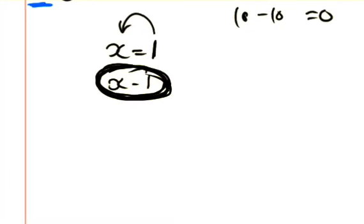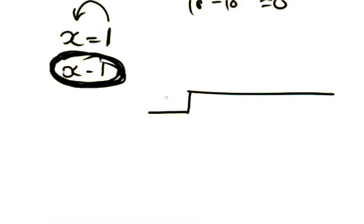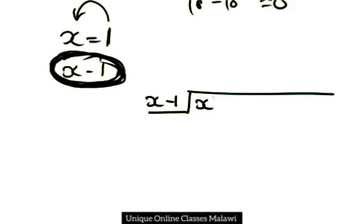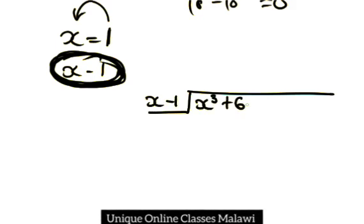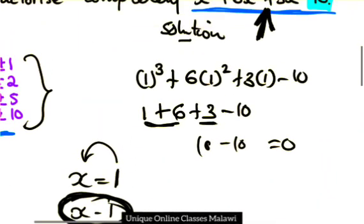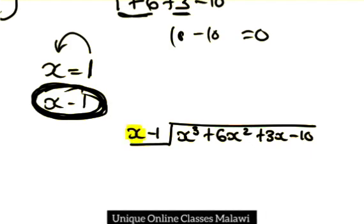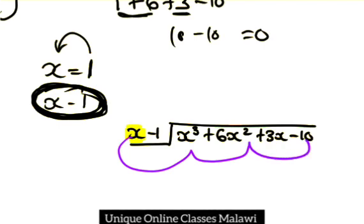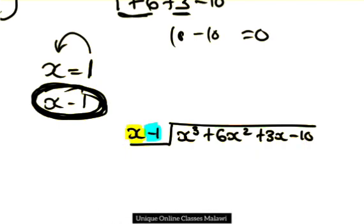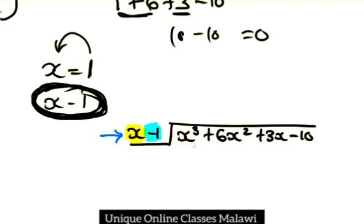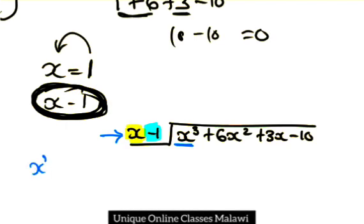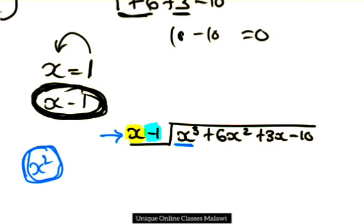Using the long division method, I will have x minus 1 dividing x cubed plus 6x squared plus 3x minus 10. This is our polynomial.